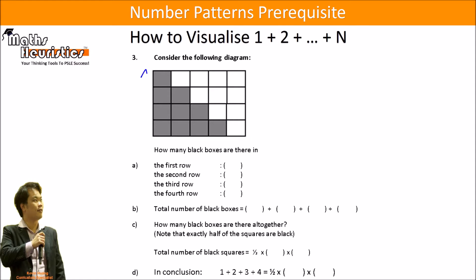Then one step further again. Now it becomes a 4 by 5 rectangle. In the first row that's 1, in the second row that's 2, in the third row that's 3, in the fourth row that's 4. So the total number of black boxes will be 1 plus 2 plus 3 plus 4.